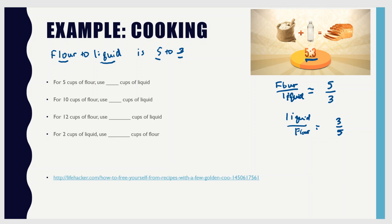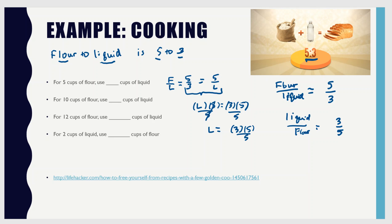So if I want to know how much liquid I need for 5 cups of flour, I take the fraction flour over liquid equals 5 over 3, and set it equal to 5 over L. I'll cross multiply: L times 5 equals 3 times 5. I'll divide by 5; it cancels on the left-hand side, giving liquid equals 3 times 5 over 5, which is just 3. That's probably not a surprise because we already know 5 cups of flour goes with 3 cups of liquid.